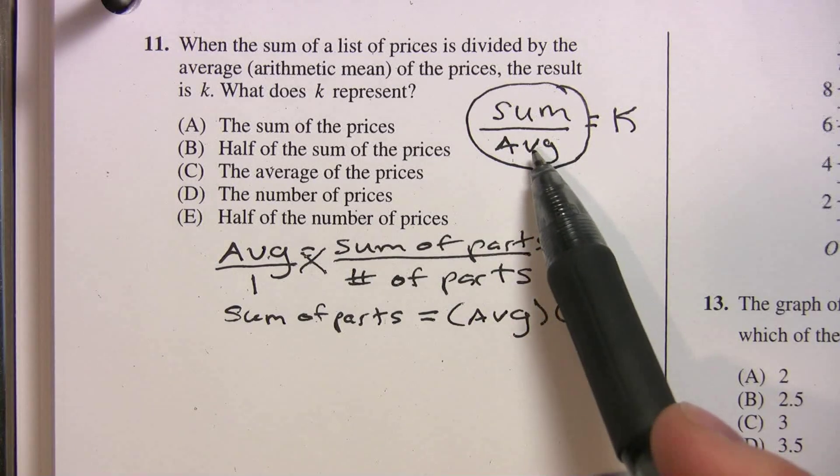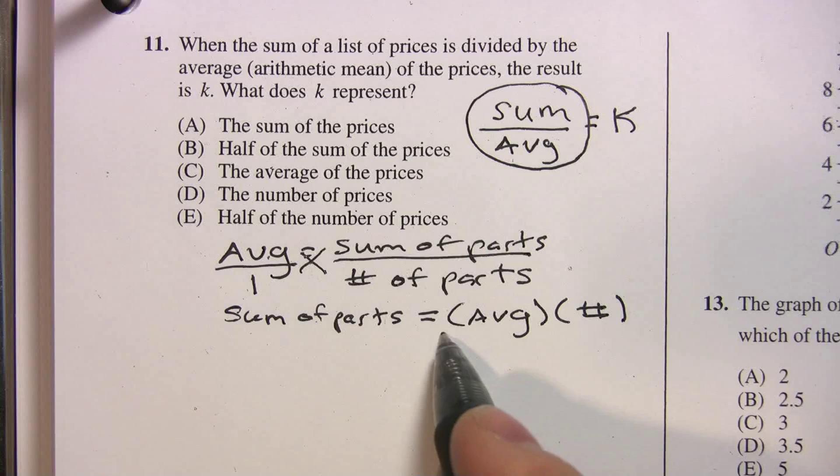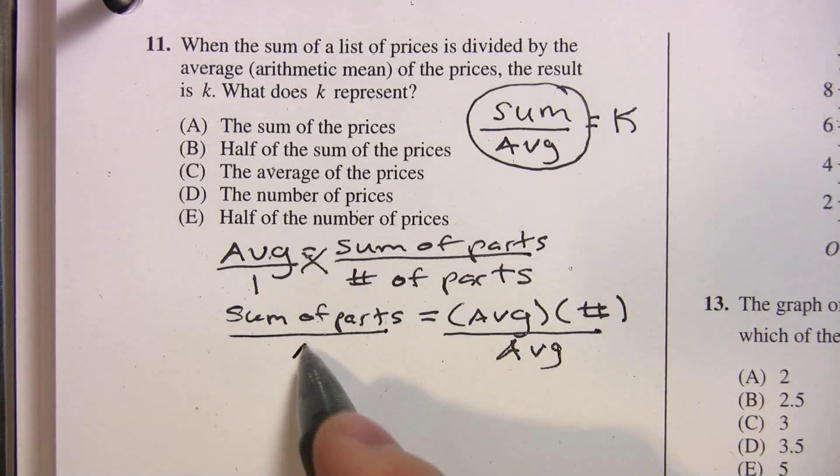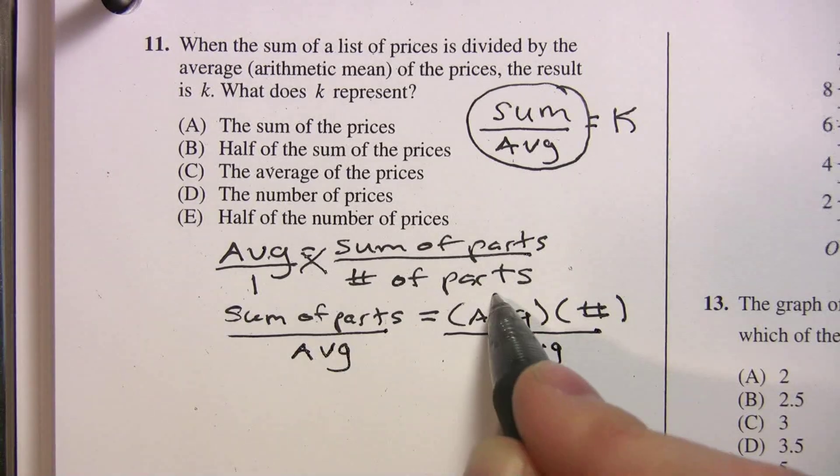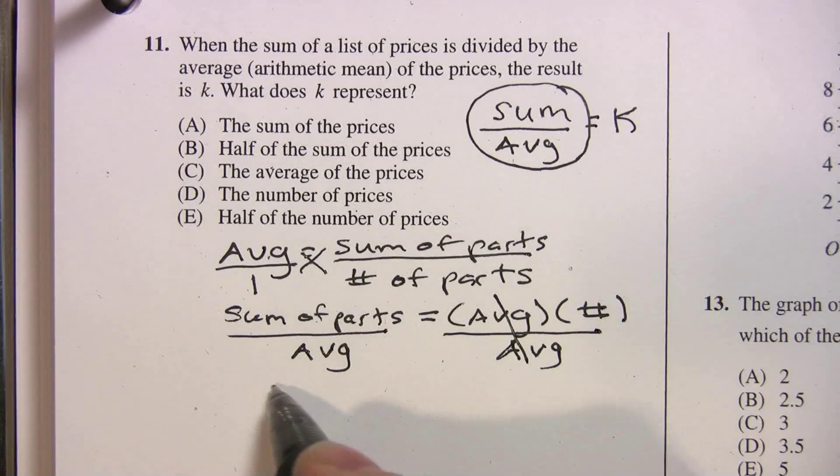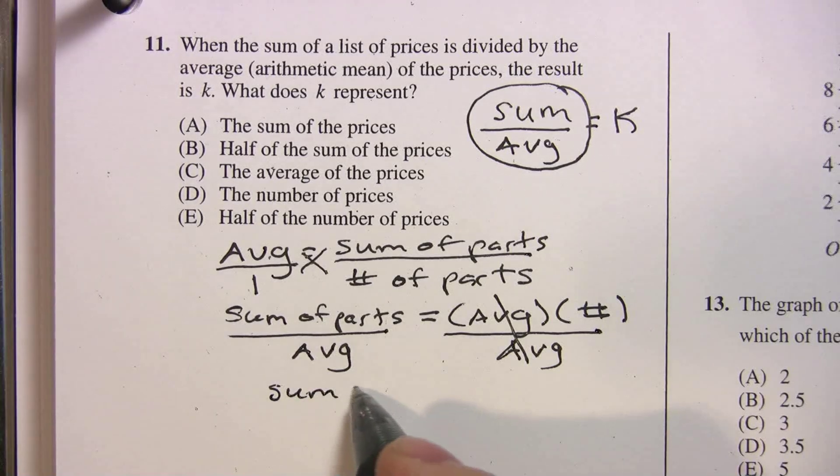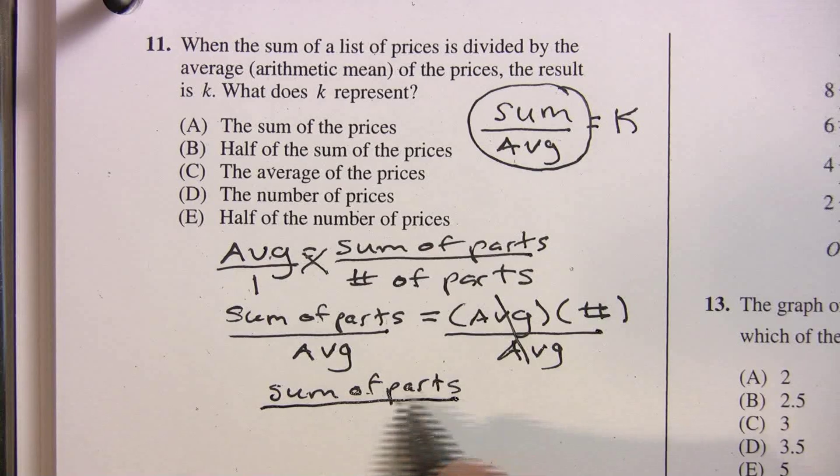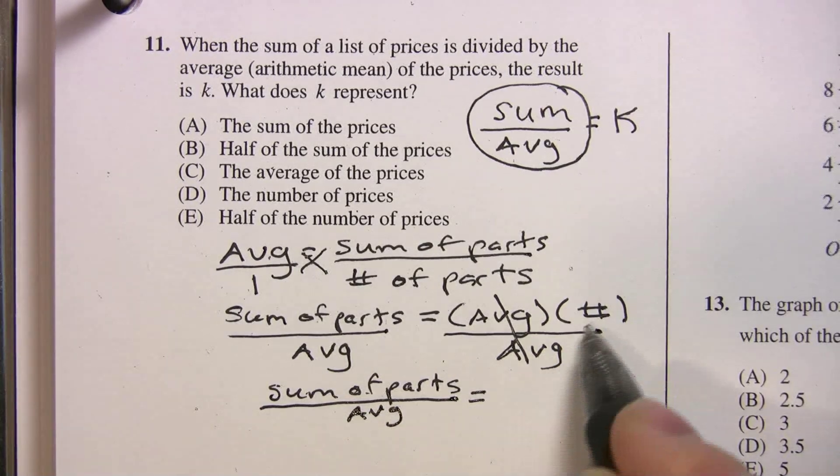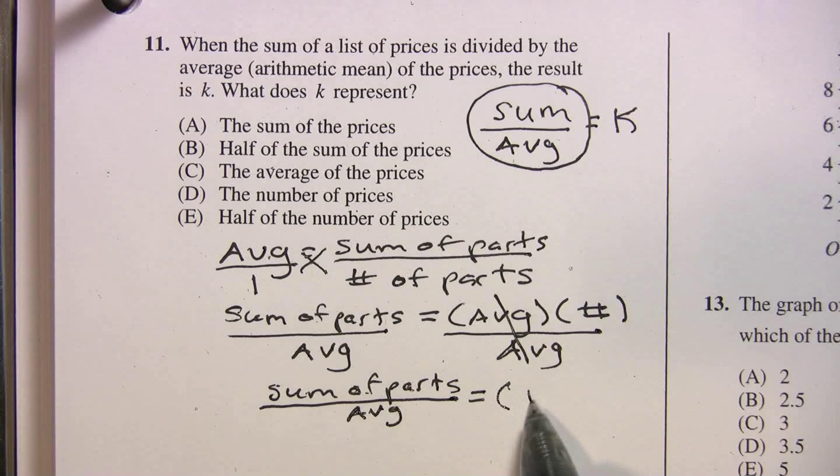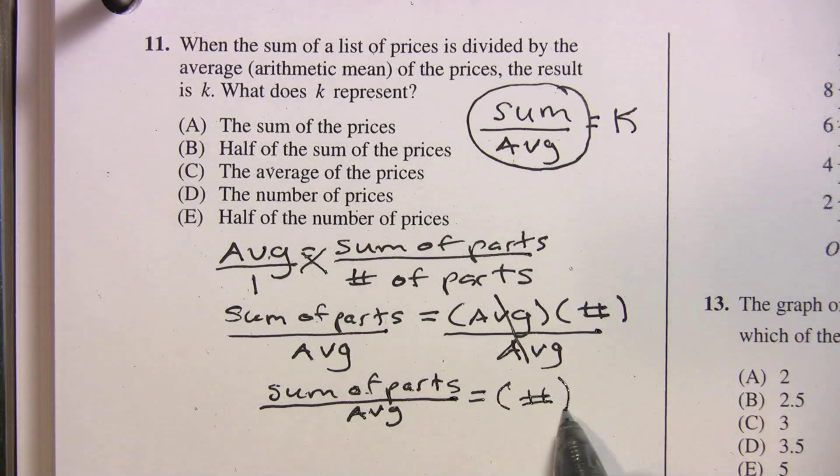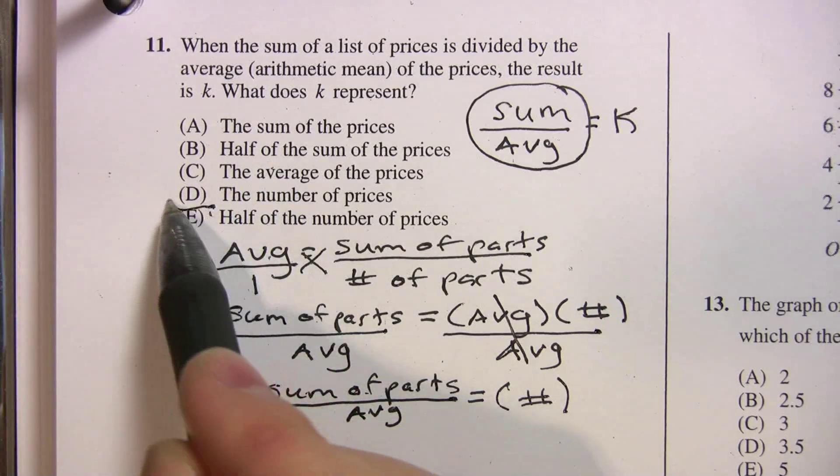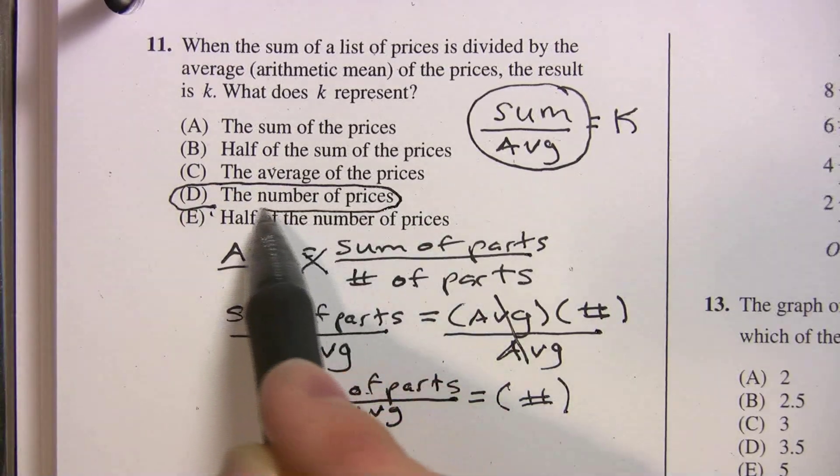So again, what's our goal? To get sum over average. Well, we've got sum of parts. Let's divide both sides by the average. So I'm going to divide both sides by the average. That crosses out. And what do I get? I'll just simplify here, but you guys can probably already see it. Sum of parts divided by average equals what? The number. Or the number of parts. Which one is that? We'll go to our choices. Choice D, the number of prices.